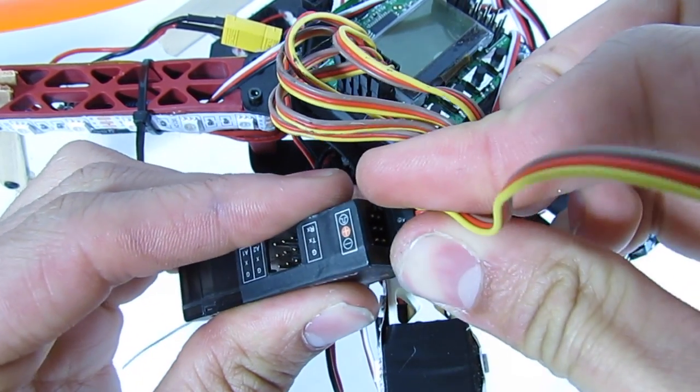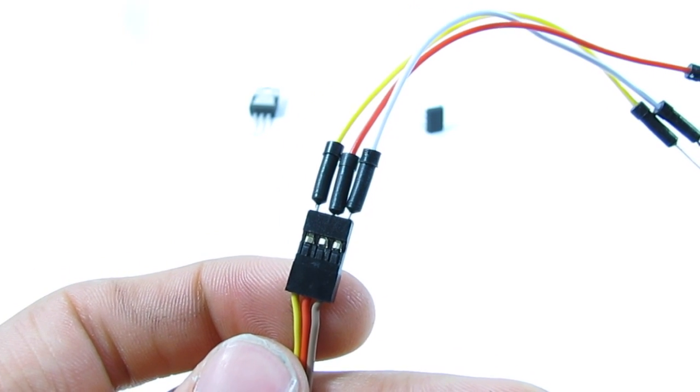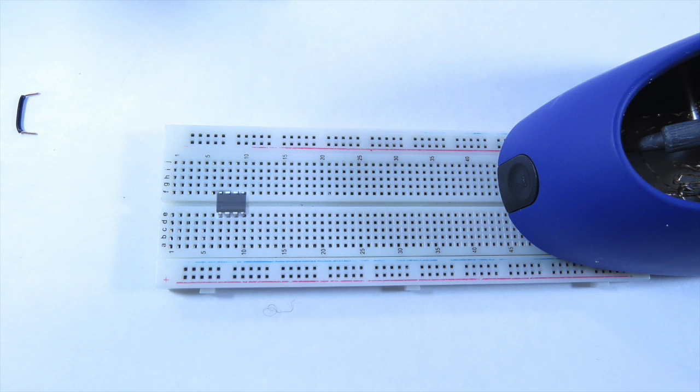It is now time to breadboard the circuit. On the opposing end of the male to male extension lead plug in three jumper wires. First place the ATtiny85 or 45 in the center of the breadboard. Followed by the tip 120 transistor. And then the cables coming off of your LED strip.